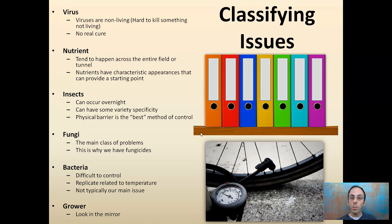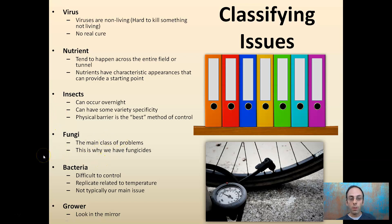When we have an issue, we want to classify it. Virus, nutrients, insects, fungi, bacteria, and the grower are all main classification areas. With viruses, it's tough in plants because they're not living — there's really no cure for them. Nutrients tend to show occurrences across a field with characteristic appearances. Insects can seem like they happen overnight, or they'll only attack certain varieties. Fungi is why we have fungicides, because it's a major area of problems. Bacteria can be difficult to control, not super common in the northeast, but certain years they're more common. And the grower can also be the issue, which can be the hardest one to admit.